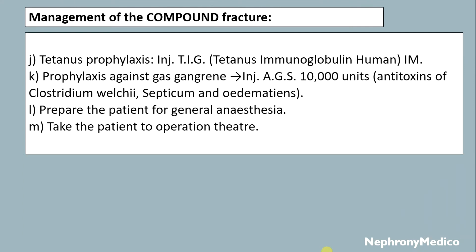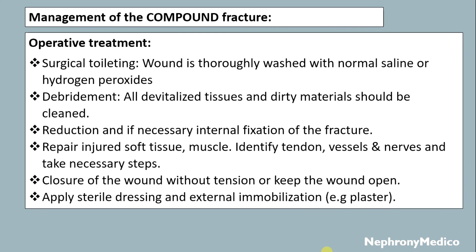Fracture immobilization and tetanus prophylaxis with injection of tetanus immunoglobulin given intramuscularly. Prophylaxis against gas gangrene with injection of antigen serum, about 10,000 units should be given. Then prepare the patient for general anesthesia and take the patient to the operation theater.